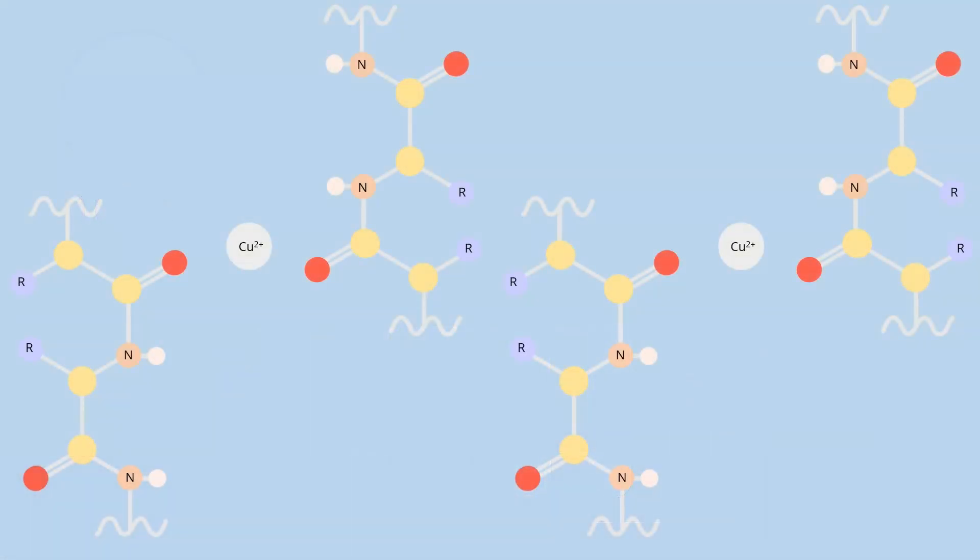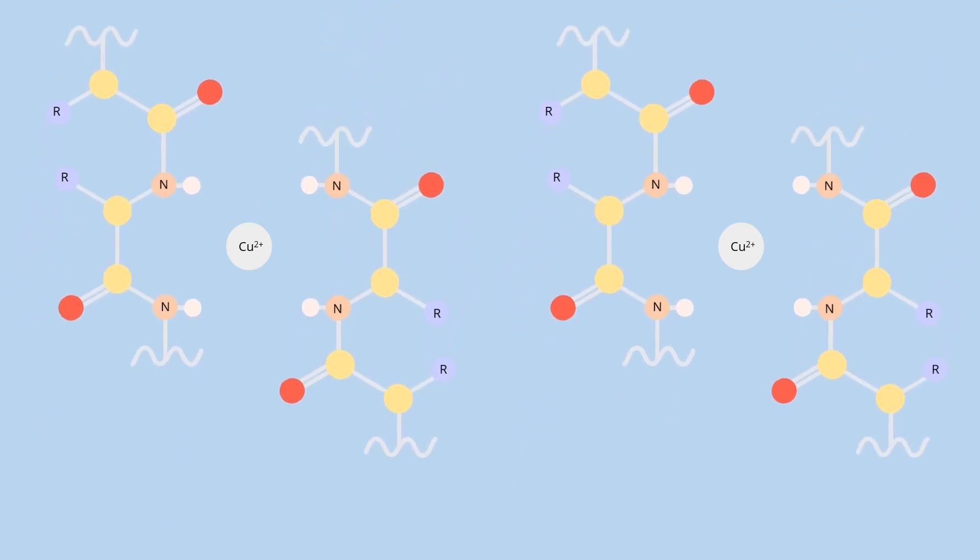During this reaction, copper ions with a 2+ charge, also called cupric ions, interact with peptide bonds connecting amino acids within proteins, forming a complex.